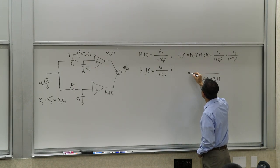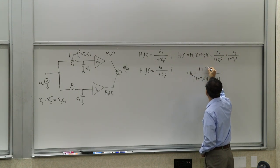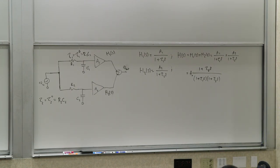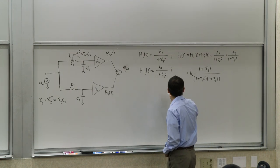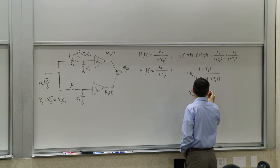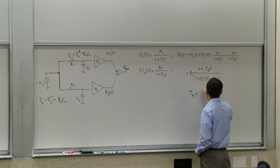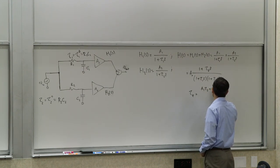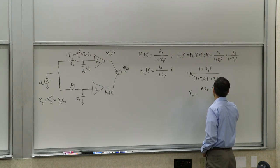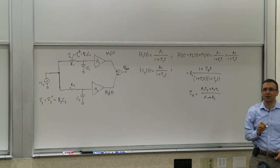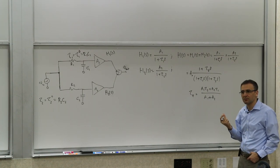What you're left with is A0 times (1 + tau_z·s) in the numerator, where tau_z = (A1·tau2 + A2·tau1) / (A1 + A2). It is a weighted average of the two time constants, weighted by the gains of the two paths.